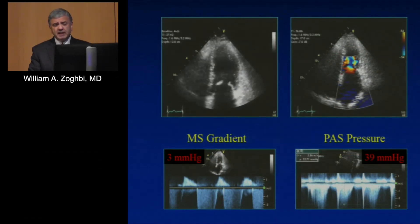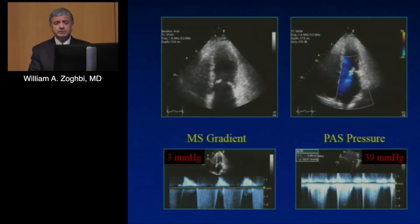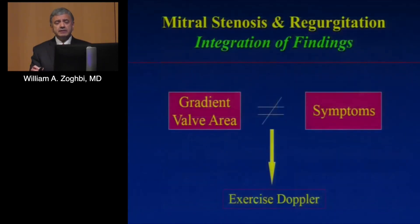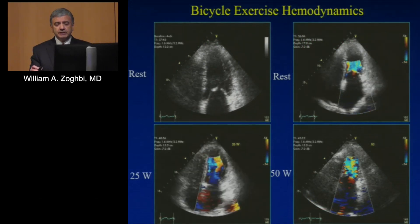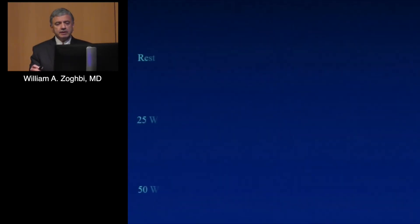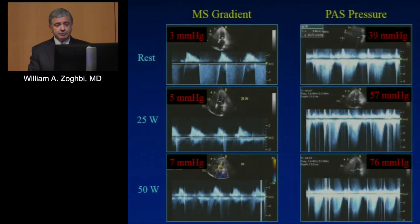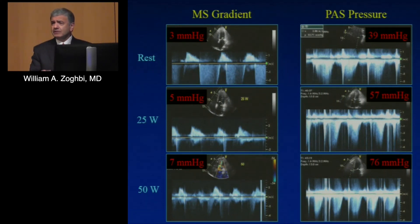At times you may have discrepancy: a smaller valve gradient, yet pressure is on the higher side and the atrium is huge. Is this really related to severity of mitral stenosis? We did a bicycle exercise study on this individual. There was mild mitral regurgitation, and with exercise PA pressure went to 76 mmHg, yet the mean gradient despite exercise was only 7 mmHg. So you know the pulmonary hypertension is not necessarily related to the severity of the mitral stenosis.